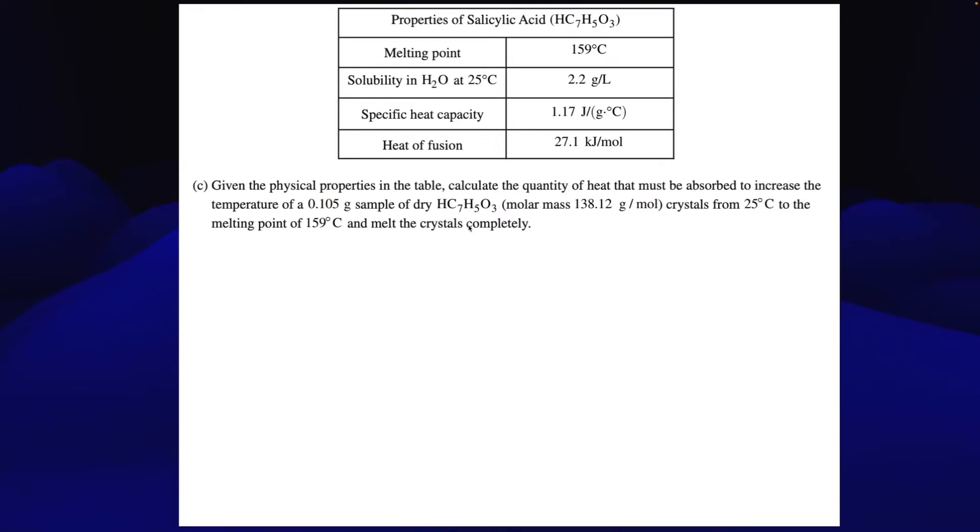All right, next. Given the physical properties in the table, calculate the quantity of heat that must be absorbed to increase the temperature of a 0.105 gram sample of our dry crystals, again giving us the molar mass of the crystals, from 25 degrees Celsius to the melting point of 159 degrees Celsius. And we want to melt the crystals completely. So we've got a lot of information here. The quantity of heat being absorbed. So we want to know joules. It's giving us a starting amount and a molar mass. It's telling us the starting temperature, and it's telling us the ending temperature, and it's also giving us the information that they need to melt completely.